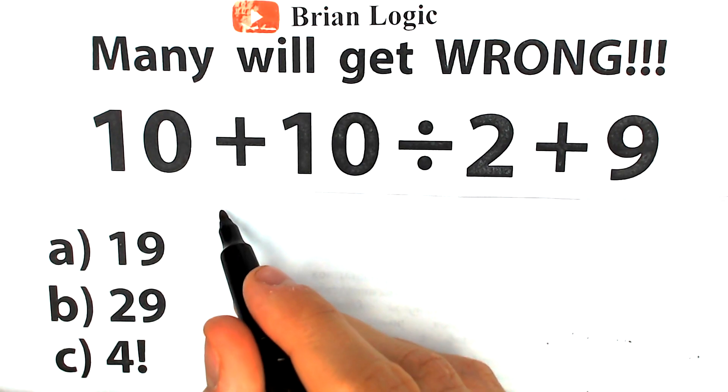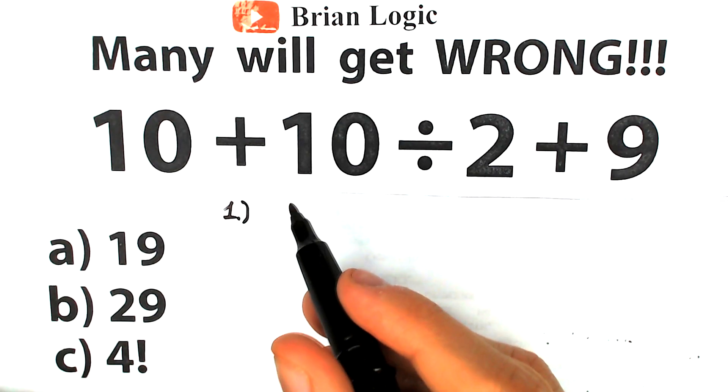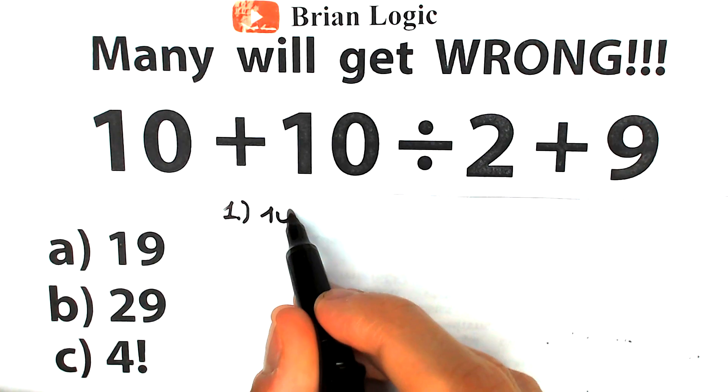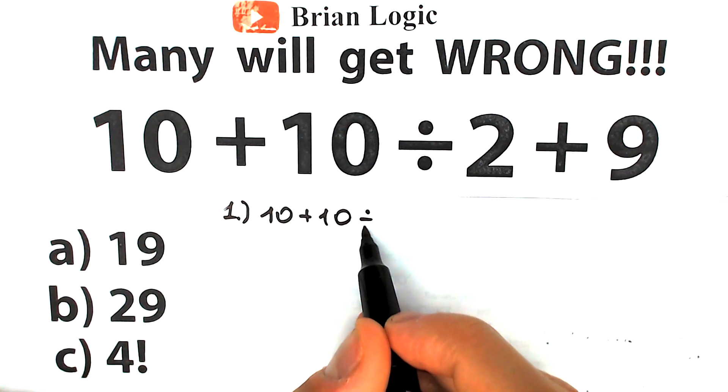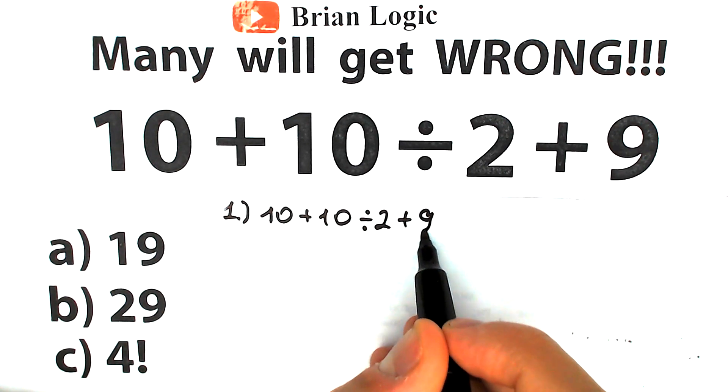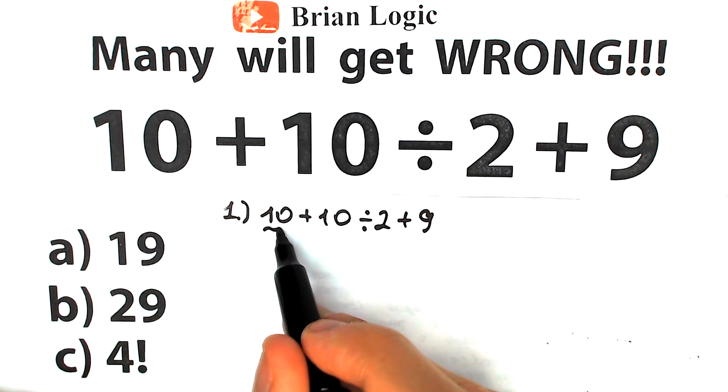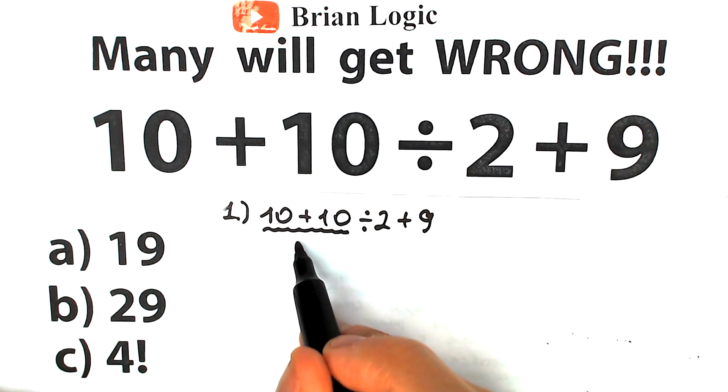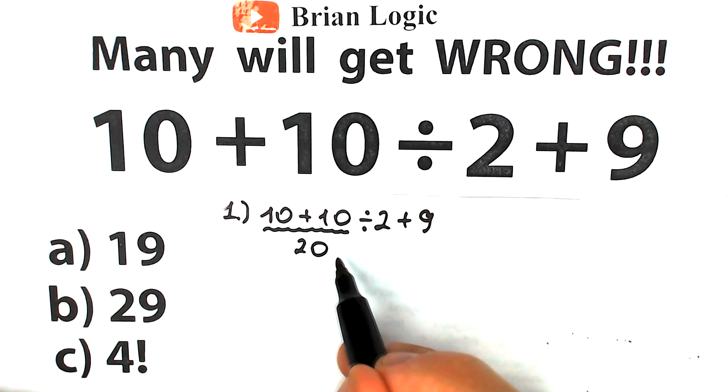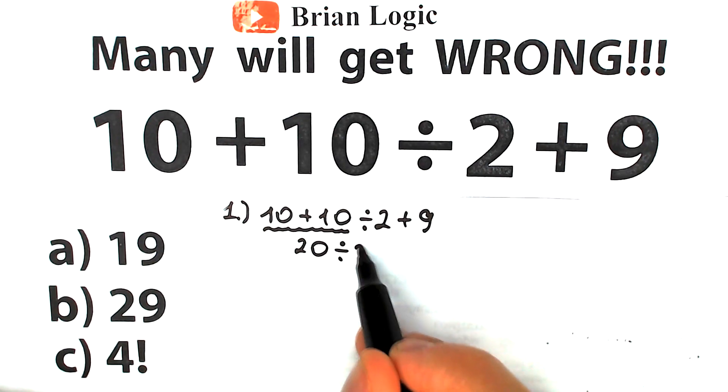First of all, I want to start with this first interpretation, because a lot of students don't know about order of operations. We have 10 + 10 ÷ 2 + 9. Many students solve this left to right. They say, okay, 10 + 10 = 20, and we still have this expression: ÷ 2 + 9.